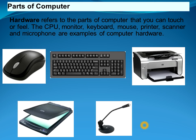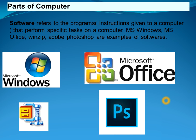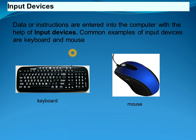In terms of computer parts, there are mainly two parts: hardware and software. Hardware refers to the parts of a computer that you can touch or feel — the CPU, monitor, keyboard, mouse, printer, scanner, and microphones are examples. Software refers to the programs or instructions given to a computer that perform specific tasks, such as Microsoft Windows, MS Office, and Photoshop.